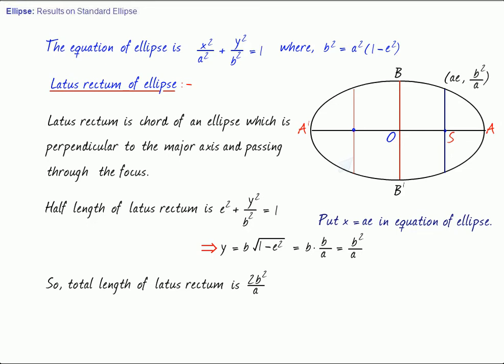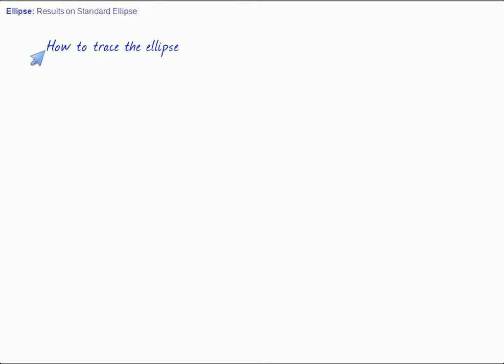Now, how to trace the ellipse and how to justify this figure, which we normally do in elemental classes on ellipse? Let us trace the ellipse now. The equation is x square upon a square plus y square upon b square equals 1. And only the 4 points are known to us, that ellipse passes through a0, minus a0, 0b, 0 minus b.